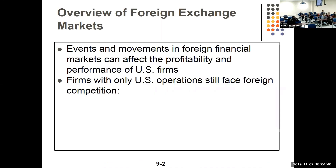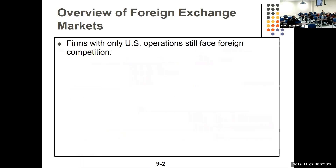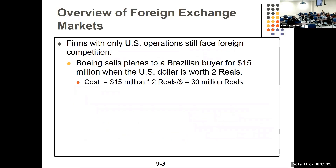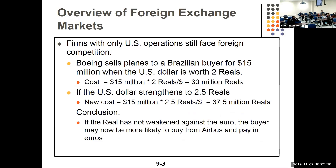Foreign exchange can affect the profitability of US companies even if they only have US operations. For example, a US resort competes with European resorts — if the dollar strengthens against the euro, the cost to come to the US goes up and visitors may not come. Boeing sells planes to a Brazilian buyer for $15 million when the dollar is worth two reals, so that's 30 million reals. If the dollar strengthens, the price goes up to 37.5 million reals — they might decide to go with Airbus. So it can affect our companies even though they're not actually doing business internationally.